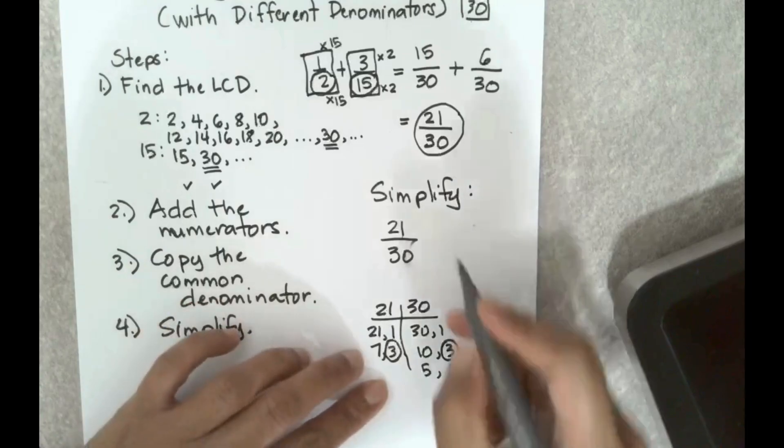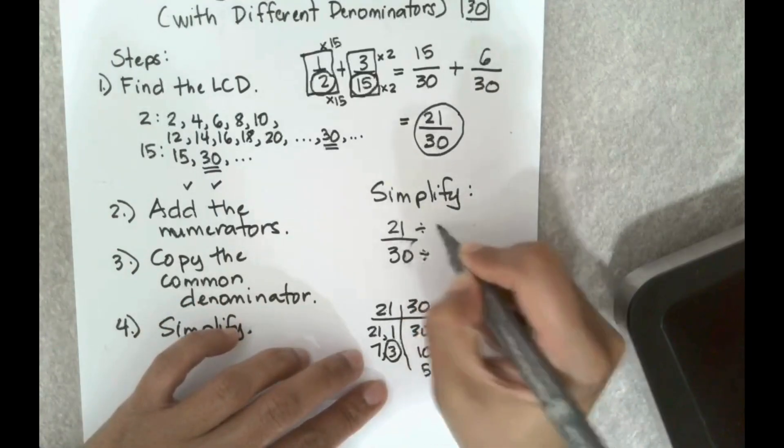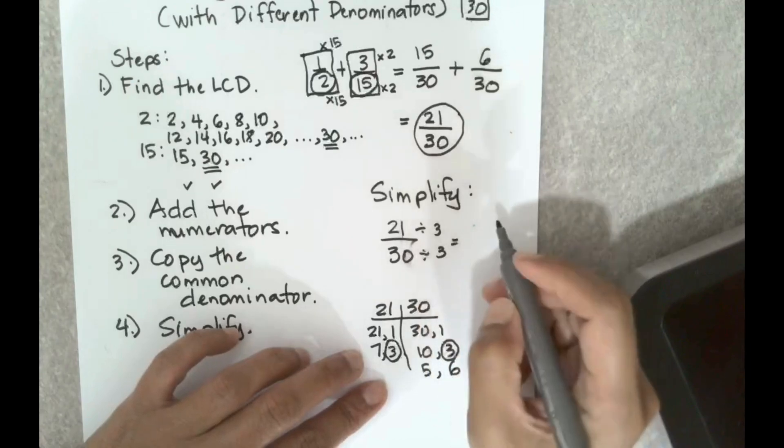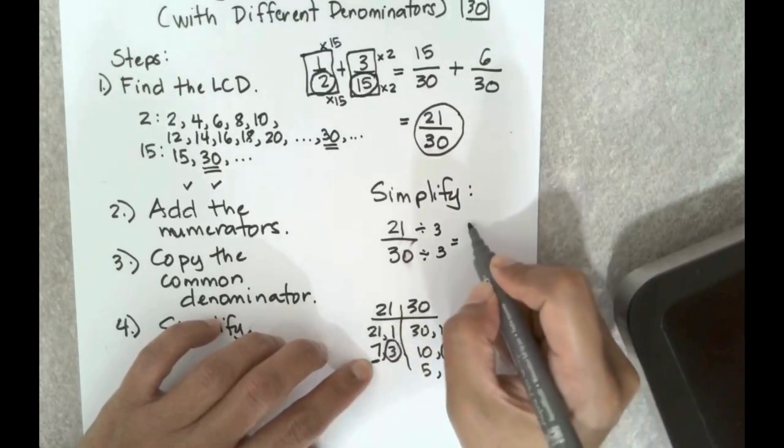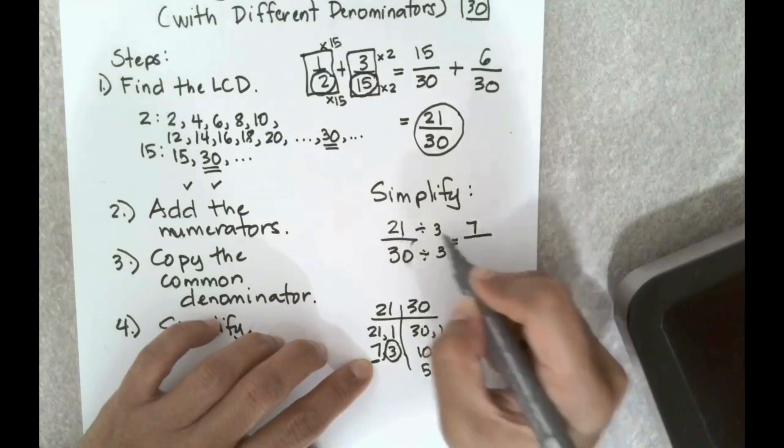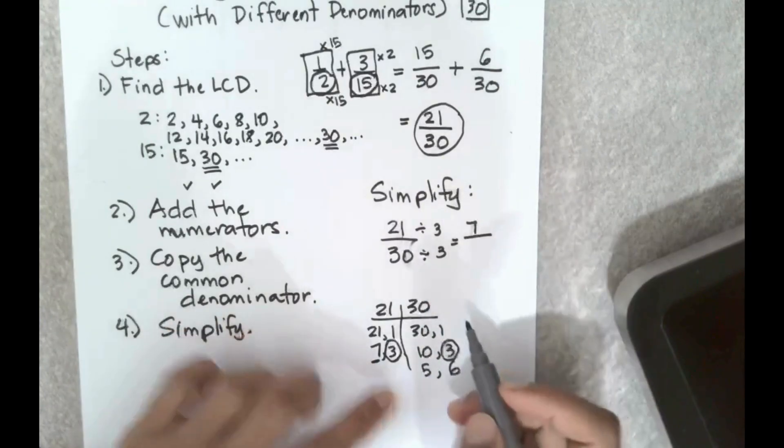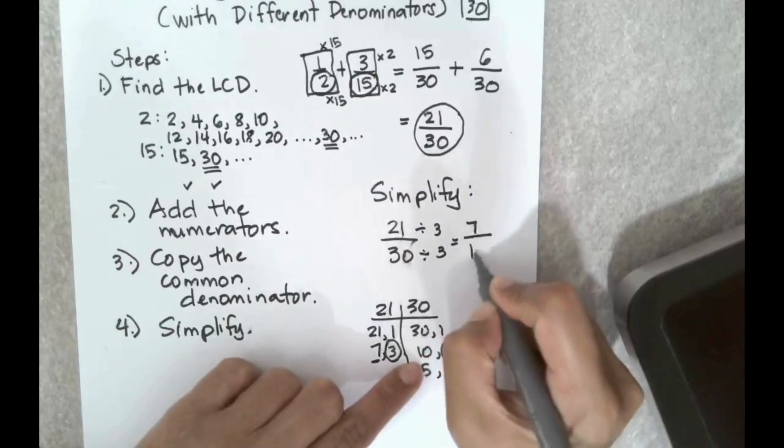So I can divide both of these by 3. 21 divided by 3 is 7, since I need to multiply 3 by 7 to get to 21, and 30 divided by 3 is 10, since 3 times 10 is 30. So this is now the simplest form.